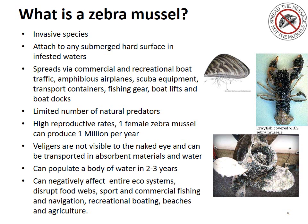Zebra mussels can populate a body of water in two to three years. And when that happens, they negatively affect the entire ecosystem, disrupting food webs, sport and commercial fishing, navigation, recreational boating, beaches, and agriculture.